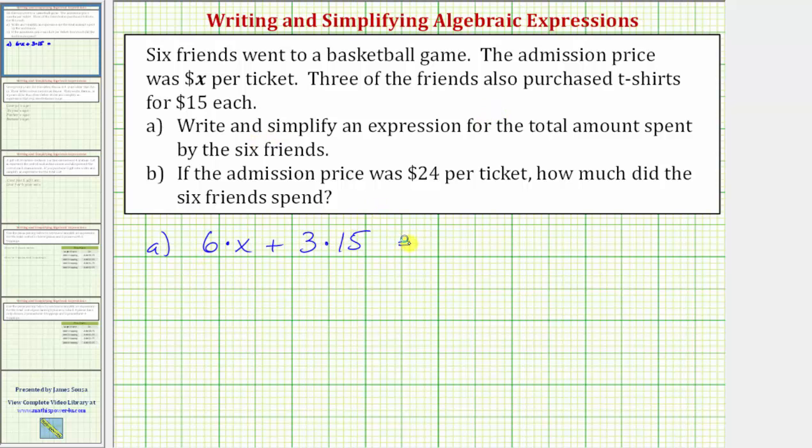Now we simplify. Six times X is 6X, plus three times 15 equals 45. The expression 6X + 45 represents the total amount spent by the six friends.